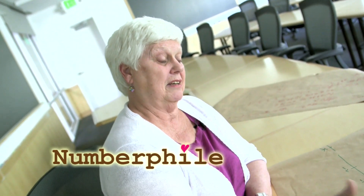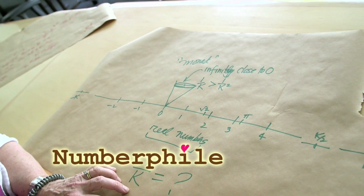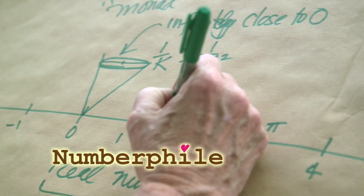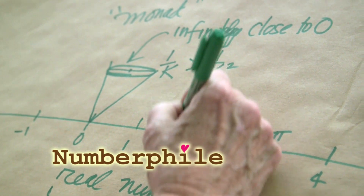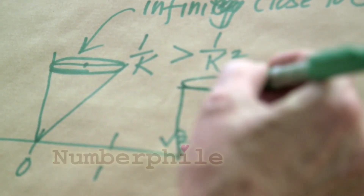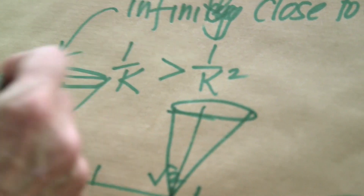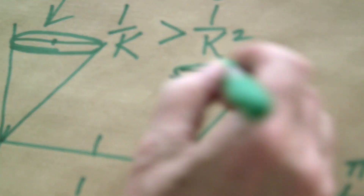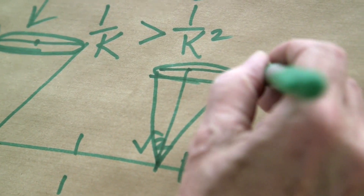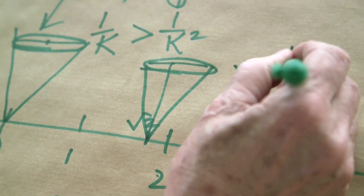It's worse than that. Let's think about square root of 2 for a minute. I can do the same thing here, because in this interval, in this monad, we have square root of 2 plus 1 over k.